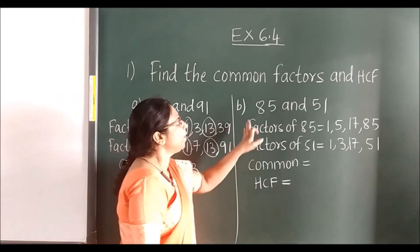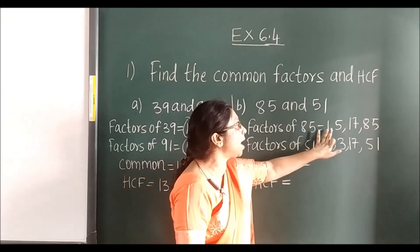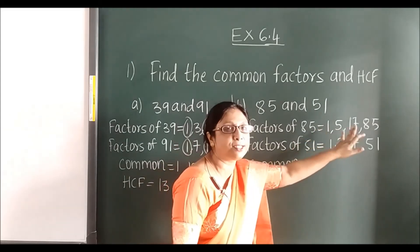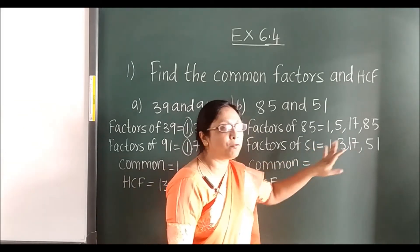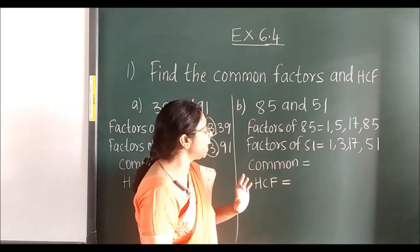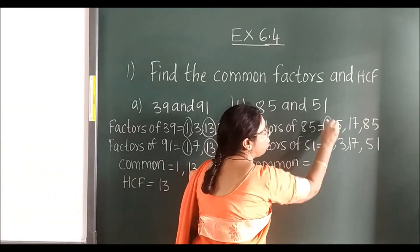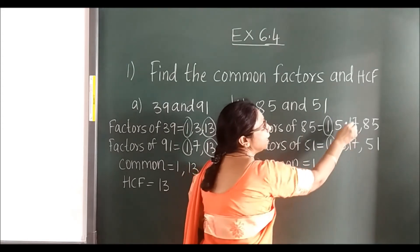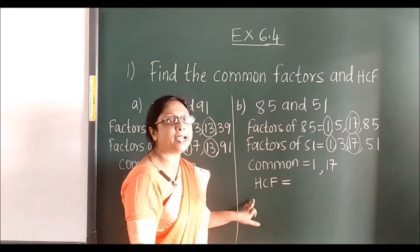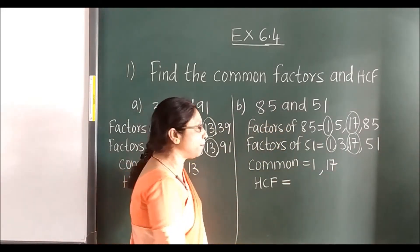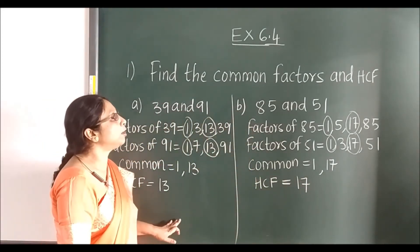Here also — 85 and 51. Factors of 85: 1, 5, 17, 85. Factors of 51: 1, 3, 17, 51. After writing the factors you find the common ones. Common factors are 1 and 17. The highest is 17, so HCF is 17.